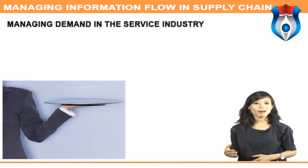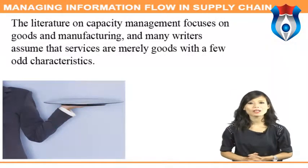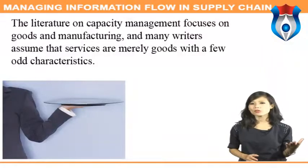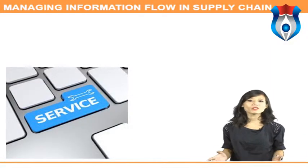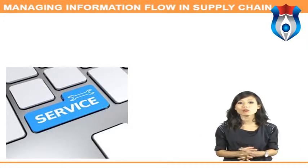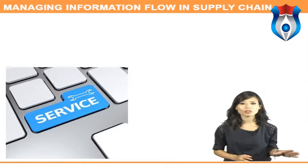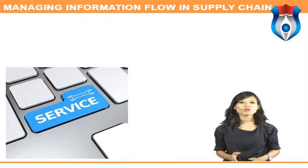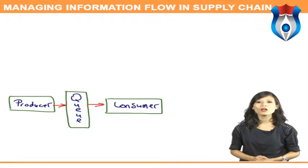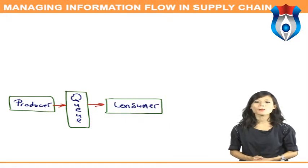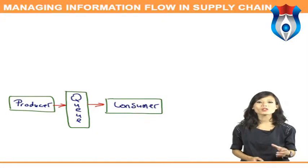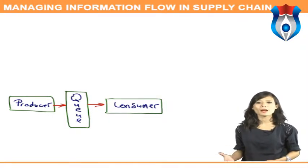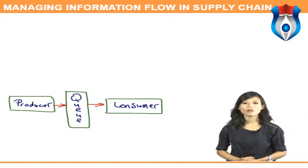Let's now discuss managing demand in the service industry. The literature on capacity management focuses on goods and manufacturing, and many writers assume that services are merely goods with a few odd characteristics. Unfortunately, these researchers never fully explored the implications of these unique traits. Services are direct — they cannot be inventoried. The perishability of services leaves the manager without an important buffer available to manufacturing managers. There is a high degree of producer-consumer interaction in the production of service.